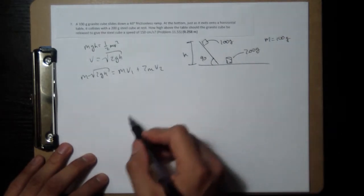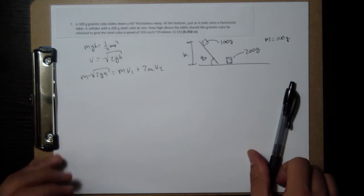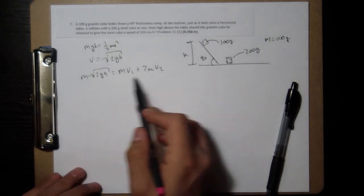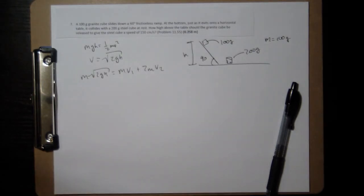the final momentum is going to be mv1 plus 2mv2. And here, I'm letting m equal 100 grams. And so 2m is going to be the 200 grams. And I'm doing that because that's how problem number four was set up. And that's going to let me more easily cancel things out. Notice here that already the m's cancel out.